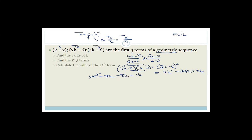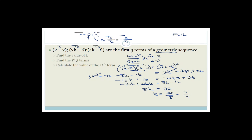The 4k squared terms cancel. So we only have to solve for k: minus 16k plus 16 equals minus 24k plus 36. Putting all k's on one side: minus 16k plus 24k equals 36 minus 16, giving 8k equals 20. Therefore k equals 20 over 8, which has a common factor of 4, so k equals 5 over 2, which is 2 and a half.